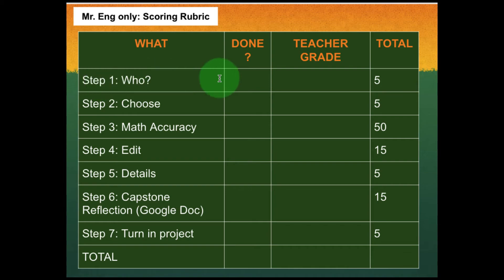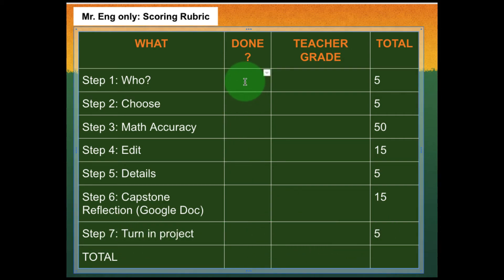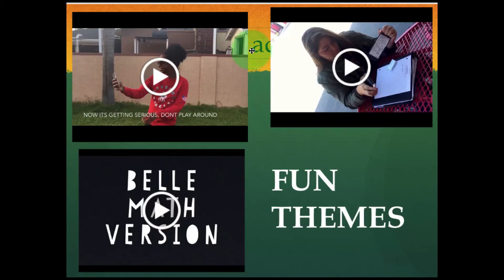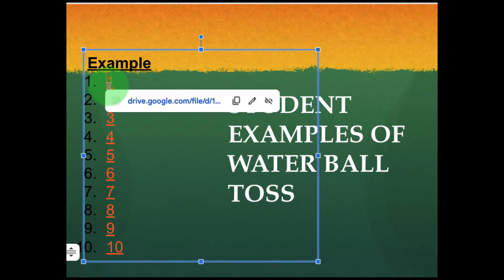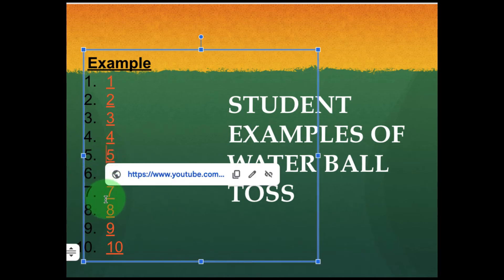Let's go over the scoring rubric. Step one is worth five points. Step two — choose your own adventure — five points. Step three — math accuracy — is the biggest one: it covers your explanation and showing of the math. Step four is your video editing. Step five is details. Step six is your capstone. Step seven is turning in on time. You can grade yourself or put check marks after completing each part. If you need some fun theme ideas, here are some student projects from past years — pick a song you like or whatever makes it fun. You can also click on completed project examples in class.